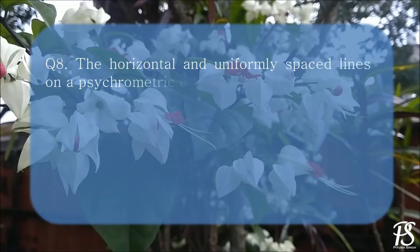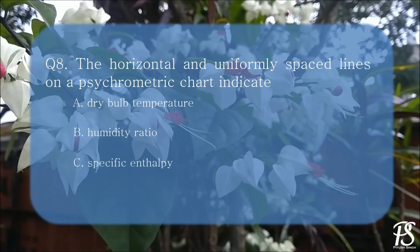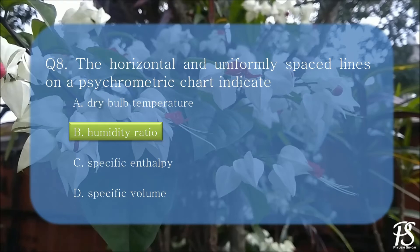The horizontal and uniformly spaced lines on a psychrometric chart indicate: A. dry bulb temperature, B. humidity ratio, C. specific enthalpy, or D. specific volume. The correct answer is B — specific humidity, also known as humidity ratio. The dry bulb temperature lines are vertical and uniformly spaced, whereas the specific enthalpy lines coincide with the wet bulb temperature lines, which are inclined. The specific volume lines are also inclined, but at a different inclination.